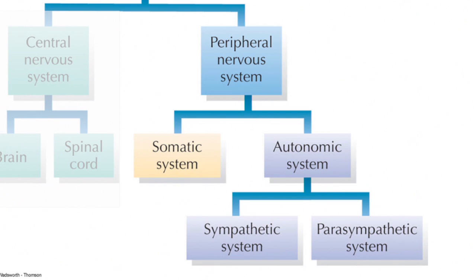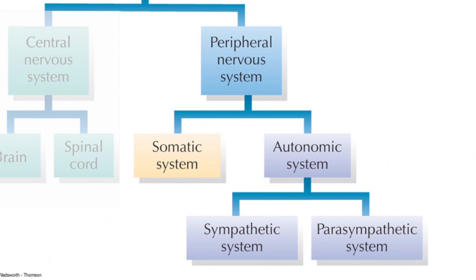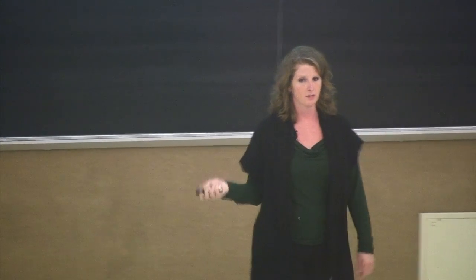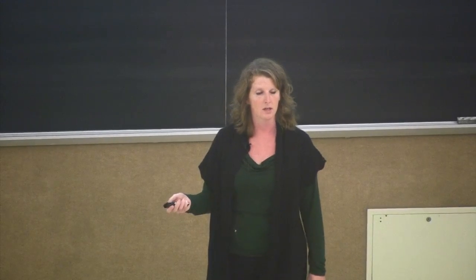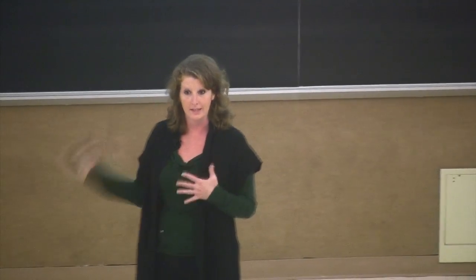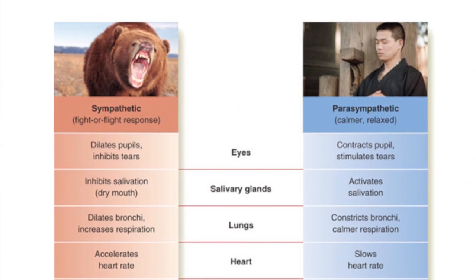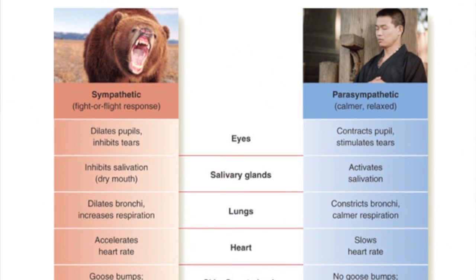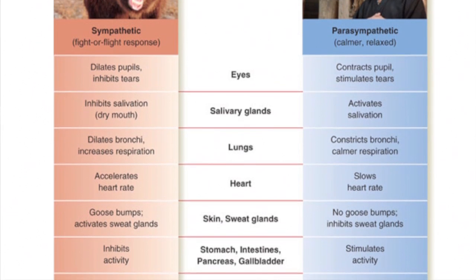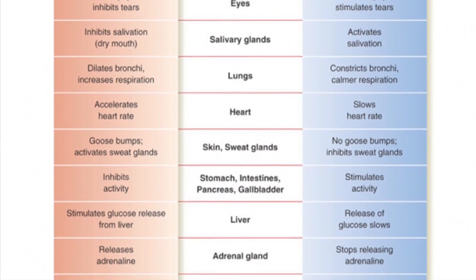We can further break that down into your sympathetic system and your parasympathetic system. These systems are really involved in functions like fight or flight. Looking more closely at this autonomic nervous system, this is just a brief overview of all of the systems that are affected when we're faced with a fight or flight situation.